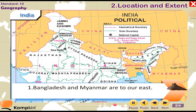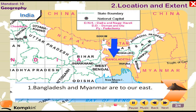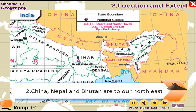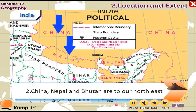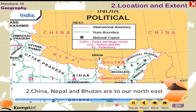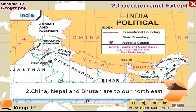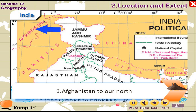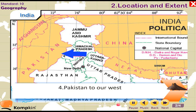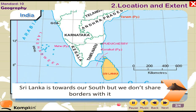India's neighboring countries: Bangladesh and Myanmar are to our east. China, Nepal, and Bhutan are to our north-east. Afghanistan is to our north. Pakistan is to our west. Sri Lanka is towards our south, but we do not share a border with it.